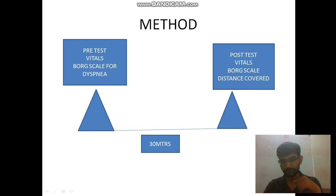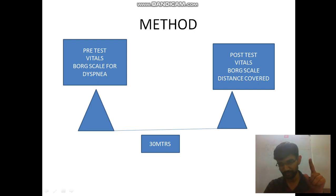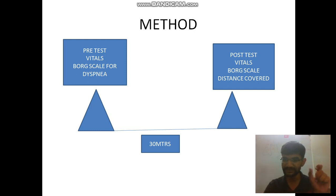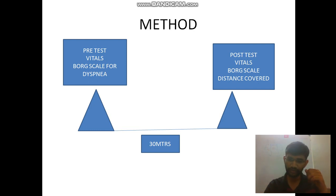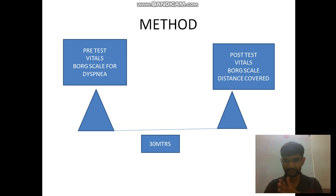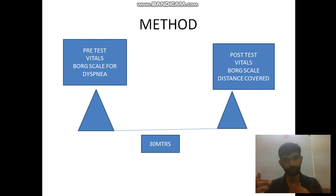We then ask the patient to walk laps: from Cone A to Cone B and back to Cone A counts as one lap, covering 60 meters. The person walks continuously like this for six minutes, and we record the total number of laps covered. After six minutes, the patient sits on a chair and we check post-test vitals.